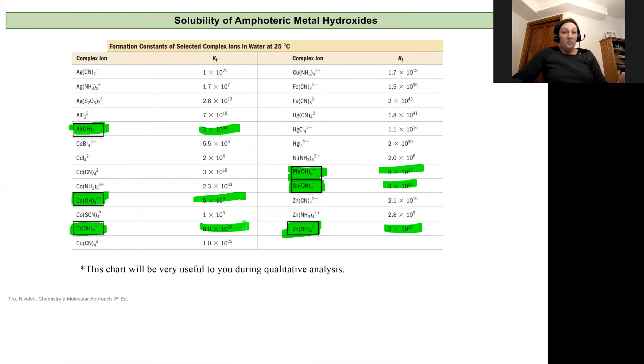These are going to be used in the qualitative analysis of cations and anions lab. And so I wanted to point out these on our formation constant table so you're aware of them as you're approaching that. And so we've talked about the aluminum, the aluminum complex ion formation. But you'll see similar behavior for cobalt and chromium, lead, tin, and zinc.